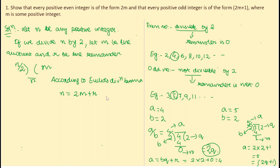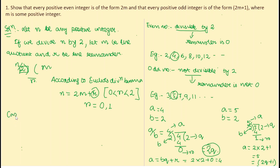The value of r can be 0 or less than the divisor 2, so the possible values of r are 0 and 1. Under Case 1, when r = 0, n = 2m. This means n is an even number.